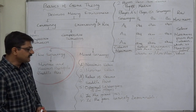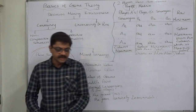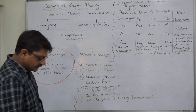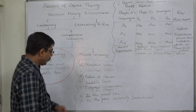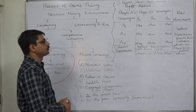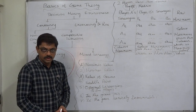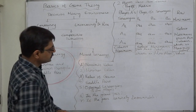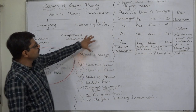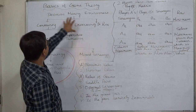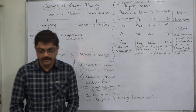The last question is: is the game strictly determinable? The game can be said to be strictly determinable only if the maximin value equals the minimax value equals the value of the game. So these are the key points to study when learning about basics of game theory — that is, the two-person zero-sum game. Thank you very much.